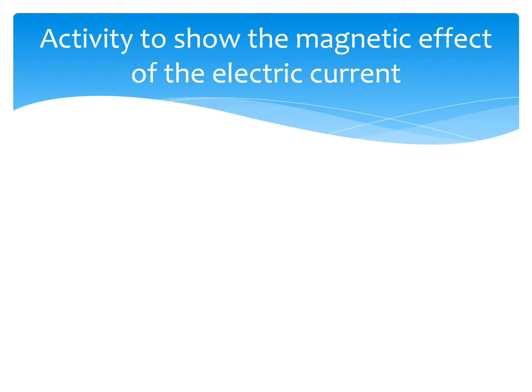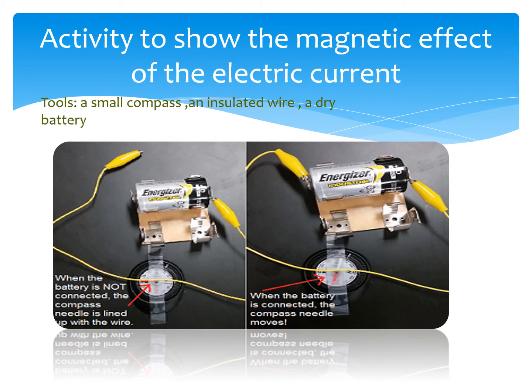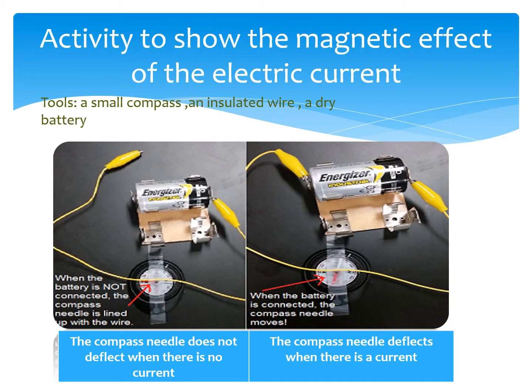An activity to show the magnetic effect of electric current. We need a small compass, an insulated wire, and a dry battery. When I place the insulated wire beside the compass which is not connected to a battery, we observe that the compass needle doesn't deflect when there is no current.